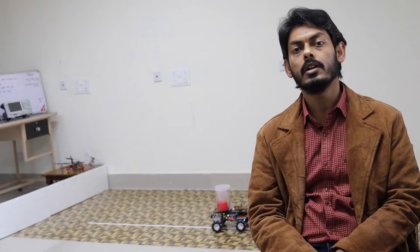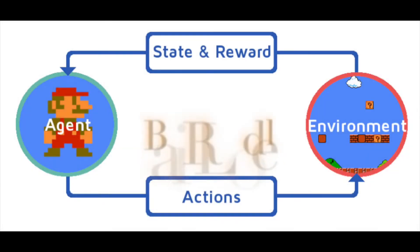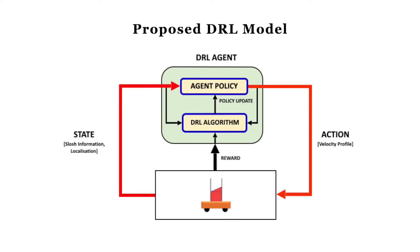Since the actual slosh dynamics is highly nonlinear and complex, traditional controllers are not much effective in dealing with the slosh suppression problem. Our objective is to use the deep reinforcement learning framework to generate reference speed profiles of the mobile robot so that slosh is minimized as well as destination is reached in minimum time while the robot follows a reference path.